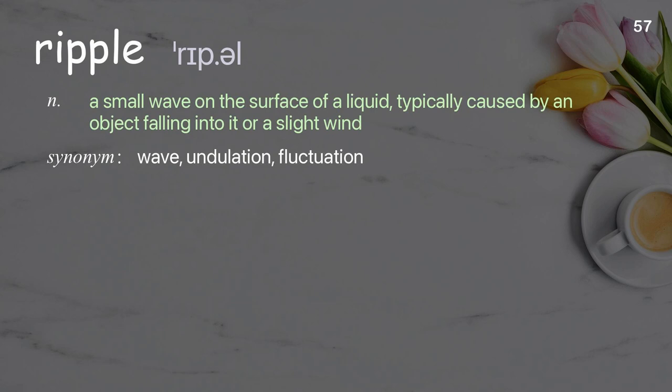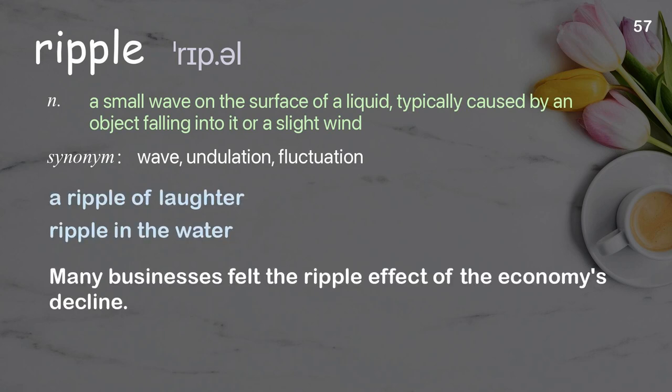Ripple: a small wave on the surface of a liquid, typically caused by an object falling into it or a slight wind. Examples: A ripple of laughter. Ripple in the water. Many businesses felt the ripple effect of the economy's decline.